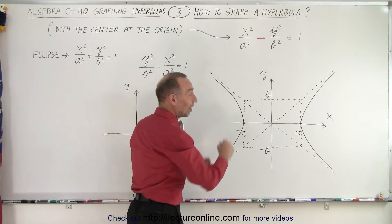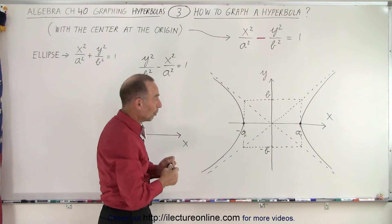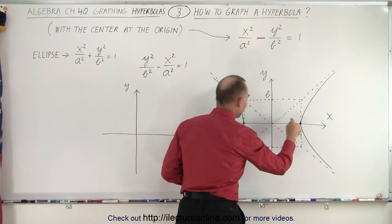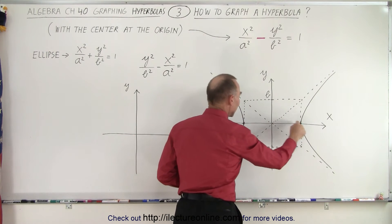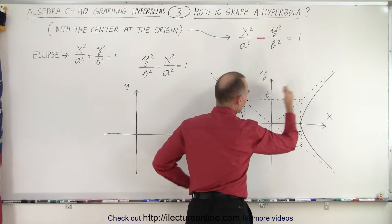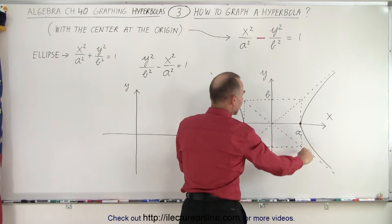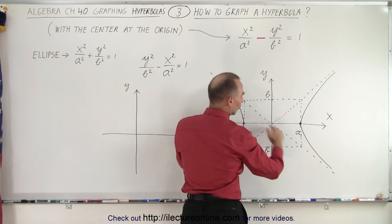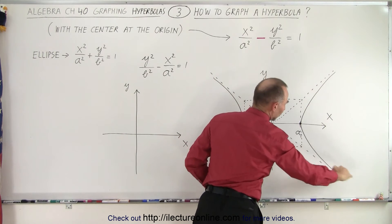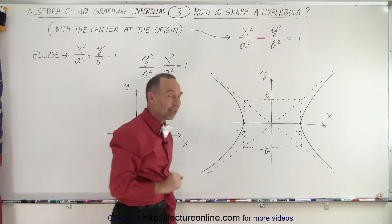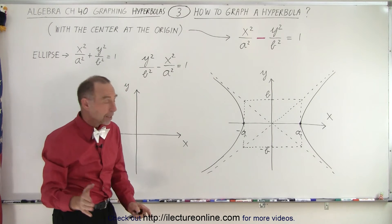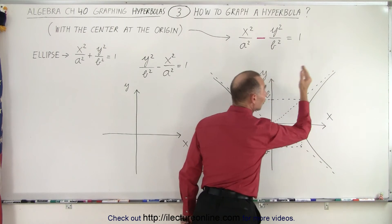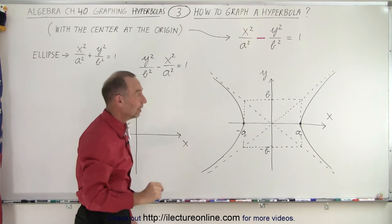Now you can see this is your hyperbola in the case that it opens sideways. The vertices are at the points A and negative A. Those diagonal lines going through the corners are your guiding lines that the hyperbola will approach asymptotically — meaning it gets closer and closer but never quite reaches them until infinity.